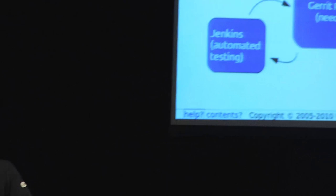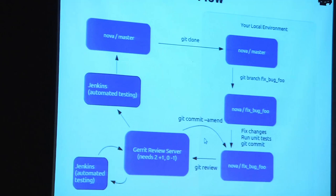We automate everything because there are four of us and 1,600 developers — so if it's not automated, we can't handle it. The process goes like this — it's a cycle, because you're going to write more than just one patch. You clone the software locally, make your changes, and of course you run unit tests locally. Then you run the git review command and submit it to our Gerrit review server. At that point there will be some cycles of testing, you'll get code reviews, and if they don't like your change, you amend your commit and resubmit it.